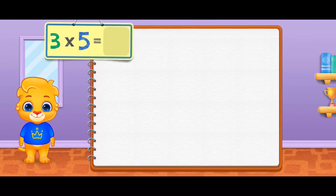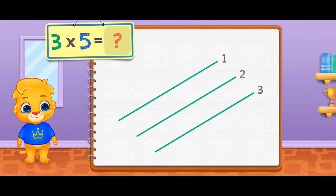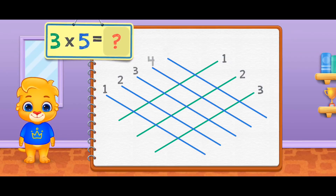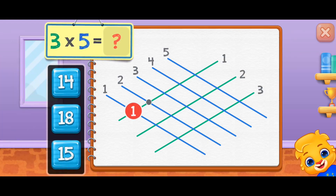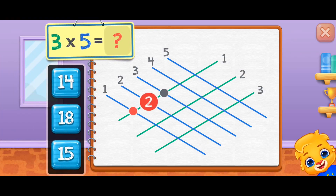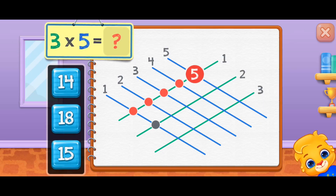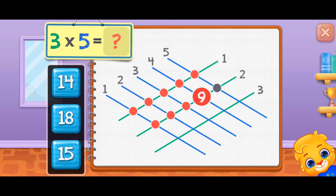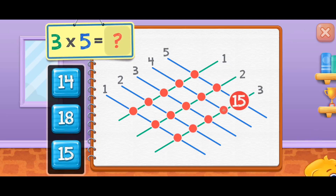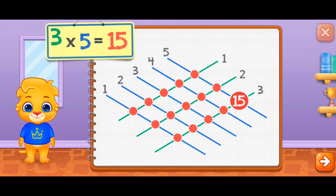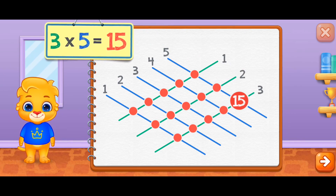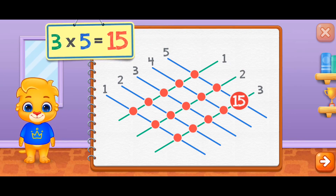Three times five equals — one, two, three, four, five, six, seven, eight, nine, ten, eleven, twelve, thirteen, fourteen, fifteen. Three times five equals fifteen.